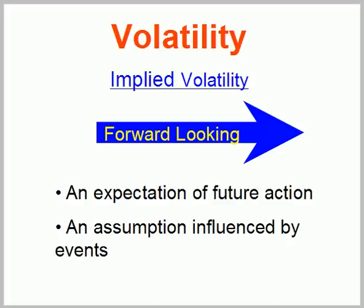In contrast to that, implied volatility is forward-looking. The math on this gets a little bit more complicated, generally because you're talking about options here. But what you're doing is you're acknowledging what historical volatility has been, but you're looking at options and basically saying, given what's coming down the road as far as future events, what do we anticipate the volatility is going to be? So in other words, it's an expectation of future volatility — an assumption influenced by upcoming events.